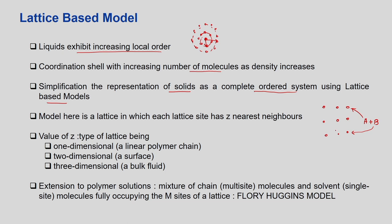If the two components are indistinguishable within their own type — component A molecules are similar to each other, and component B molecules are similar to each other — we have some simplification. We can model this lattice such that each lattice site has Z nearest neighbors, meaning the closest other species in its vicinity.